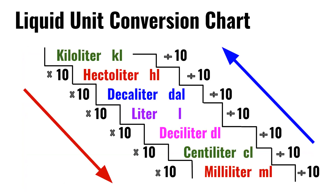Liquid unit conversion chart. First, we have the kiloliter, which is kL. Times 10 is the hectoliter, which is hL. Hectoliter times 10 is the decaliter, which is daL. Decaliter times 10 is the liter, which is L.